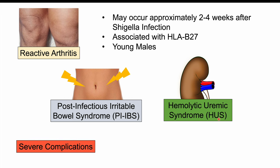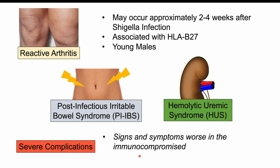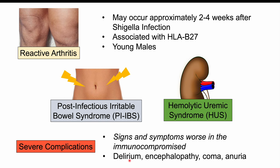Other severe complications occur more commonly in immunocompromised patients — young children, elderly patients, those with HIV or AIDS, and type 2 diabetic patients. These include delirium, encephalopathy, coma, and anuria — a cessation of urination.